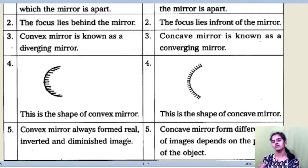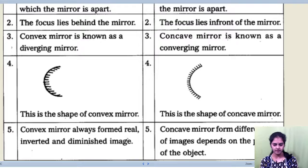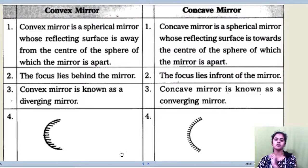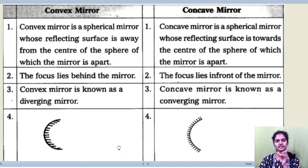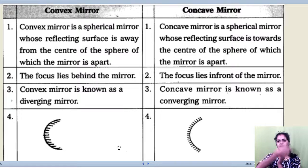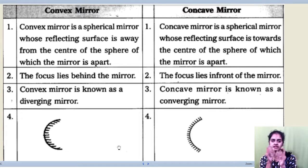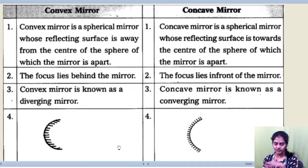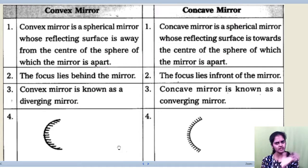A convex mirror always forms a virtual, erect, and diminished image. Concave mirrors form different types of images depending on the position of the object. Concave mirrors are used as shaving mirrors, whereas convex mirrors are used as rear-view mirrors in vehicles. Concave mirrors form real images in most cases unless the object is between the pole and focus, in which case you get a virtual image. In a concave mirror, you can also get enlarged images.